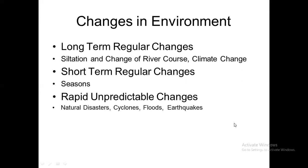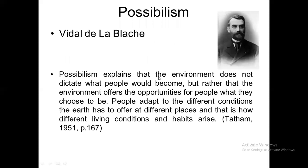Rapid, unpredictable changes in the environment are observed in natural disasters like cyclones, floods, and earthquakes, which demonstrate the dominance of the physical environment over mankind.